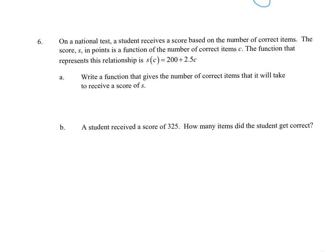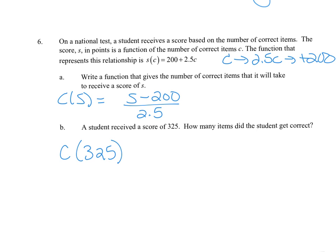For problem 6, we have a function that gives scores based on the number of correct items. For part a, writing the inverse: we started with correct items times 2.5 and then added 200. Going backwards, take the score minus 200 and divide by 2.5.